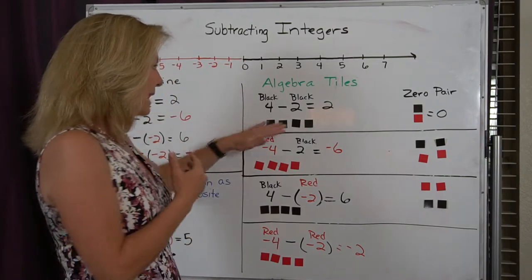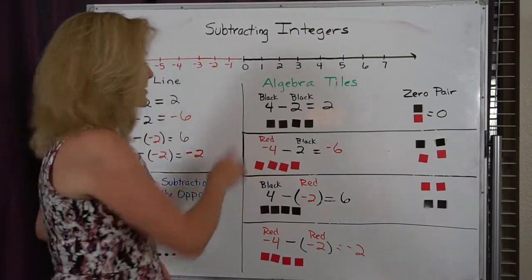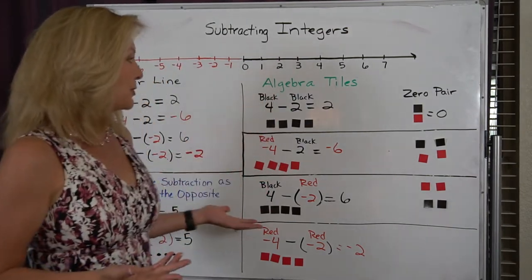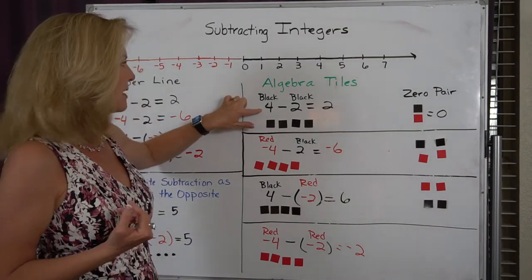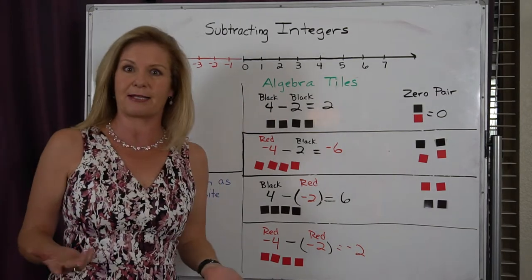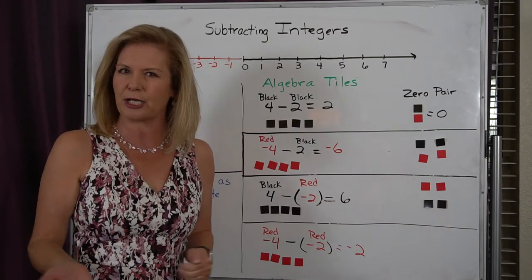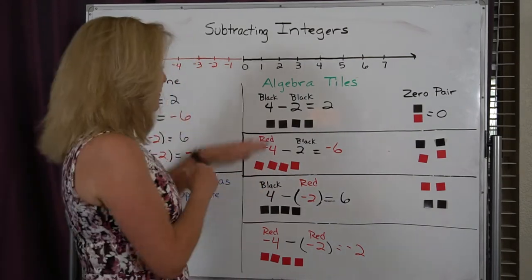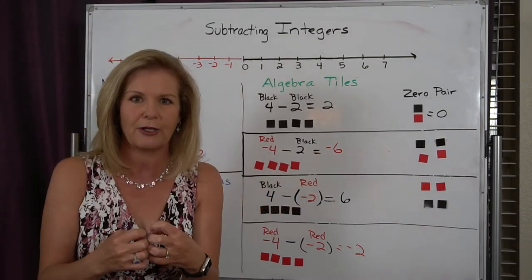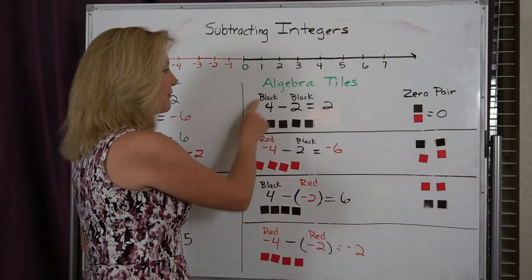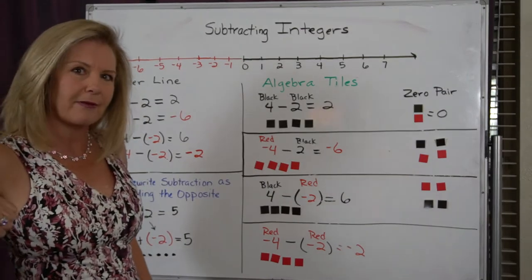The black tiles represent our positive numbers and the red tiles represent our negative numbers. The subtraction model is different from the addition model. In the addition model, we always push together. In the subtraction model, the first number is what we lay down, and the second number is what we take away from that first number.